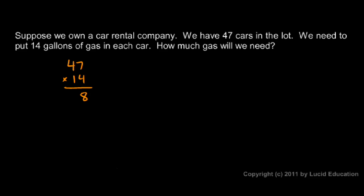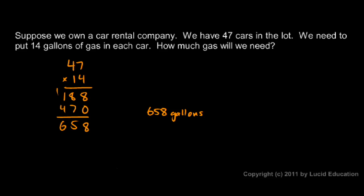7 times 4 is 28, and 4 times 4 is 16, plus that 2 is 18. Then I put a 0, and the 1 is easy — I just have a 7 and a 4, and then I add. I get an 8 there. 8 plus 7 is 15, and I have 6. So my answer is 658, and it's a good idea to write your unit on your answer — that's 658 gallons.